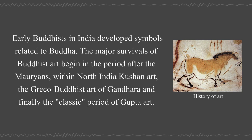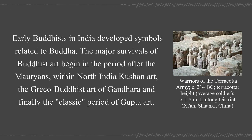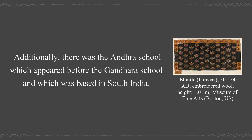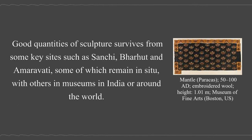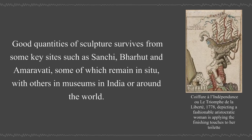Early Buddhists in India developed symbols related to Buddha. The major survivals of Buddhist art begin in the period after the Mauryans, within North India Kushan art, the Greco-Buddhist art of Gandhara, and finally the classic period of Gupta art. Additionally, there was the Andhra school which appeared before the Gandhara school and which was based in South India. Good quantities of sculpture survive from key sites such as Sanchi, Barhut, and Amaravati, some of which remain in situ, with others in museums in India or around the world.